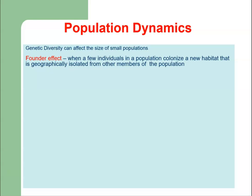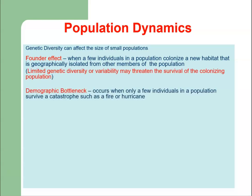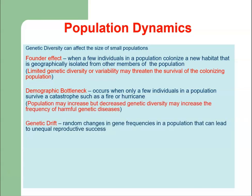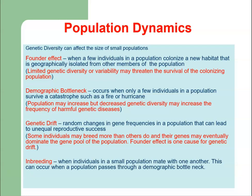Within population dynamics we have the founder effect and genetic diversity, which can affect the size of small populations. The founder effect occurs when a few individuals colonize a new habitat geographically isolated from others. Demographic bottlenecks occur when only a few individuals survive a catastrophe such as fire or hurricane. Genetic drift refers to random changes in gene frequencies that can lead to unequal reproductive success. Finally, inbreeding occurs when individuals in a small population mate with one another, and can occur when a population passes through a demographic bottleneck.